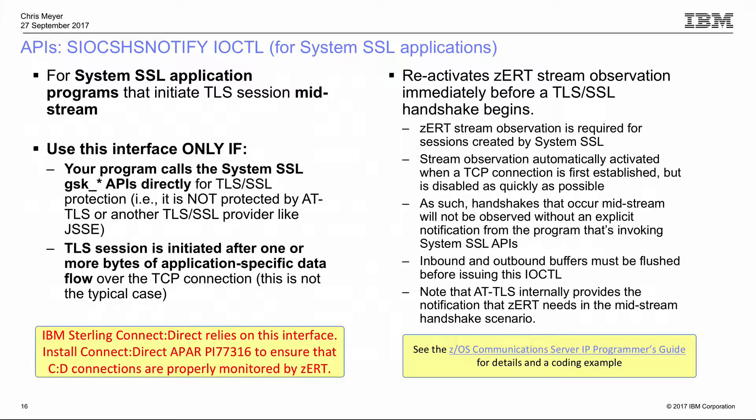For AT-TLS, the only way to do a handshake after data has already flowed is to be an AT-TLS controlling application. A controlling application uses a different IOCTL to tell AT-TLS when to start a handshake or prepare to receive one. We already have this indicator built into the system for AT-TLS, so nothing new was needed there.